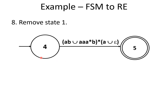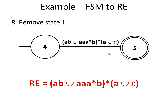Now we are left with the initial start state 4 and the final accepting state 5, with one transition from the start state to the accepting state labeled by a regular expression. Hence, the regular expression obtained for this FSM is (AB ∪ A·A·A*B)* concatenated with (A ∪ epsilon). This is the regular expression obtained from the given FSM.